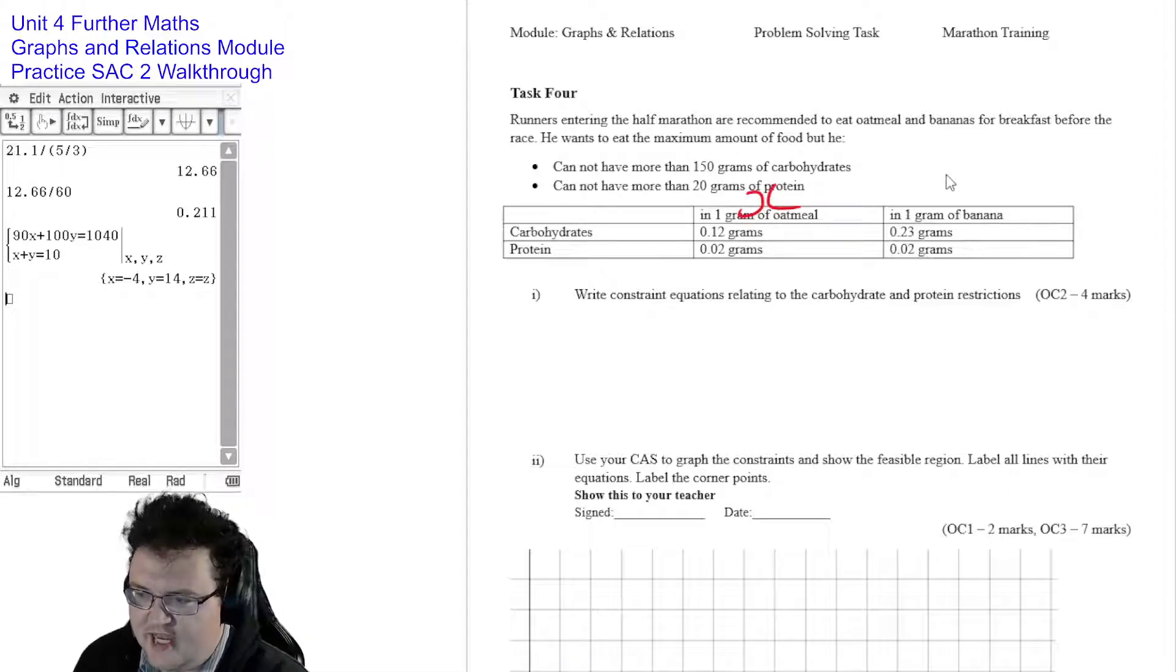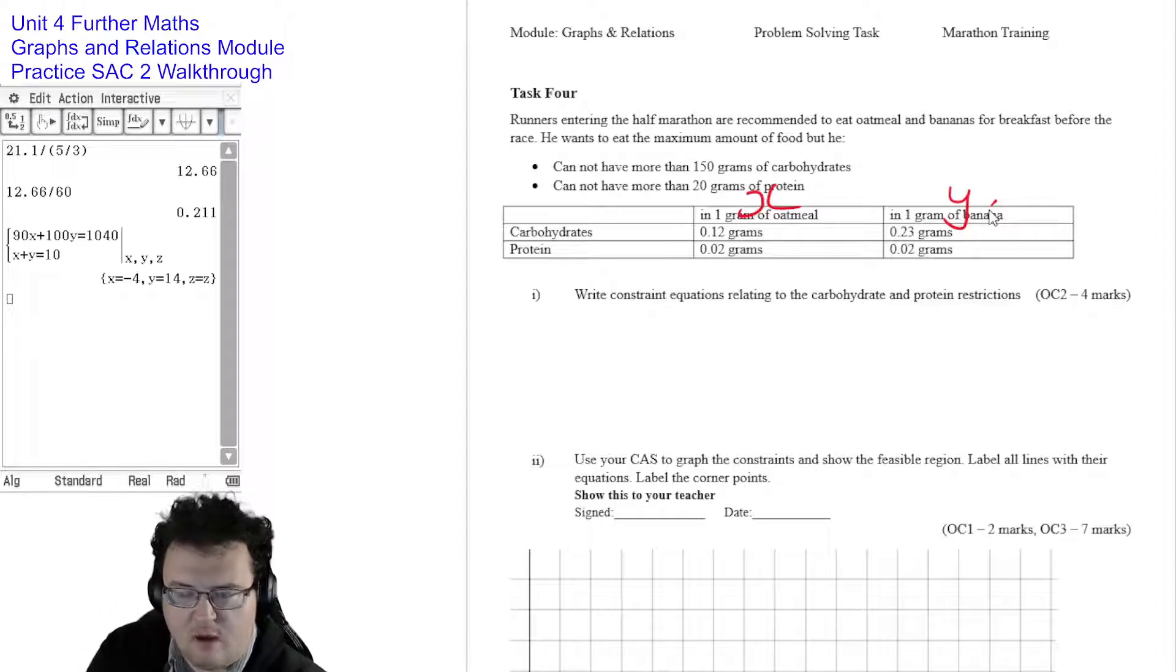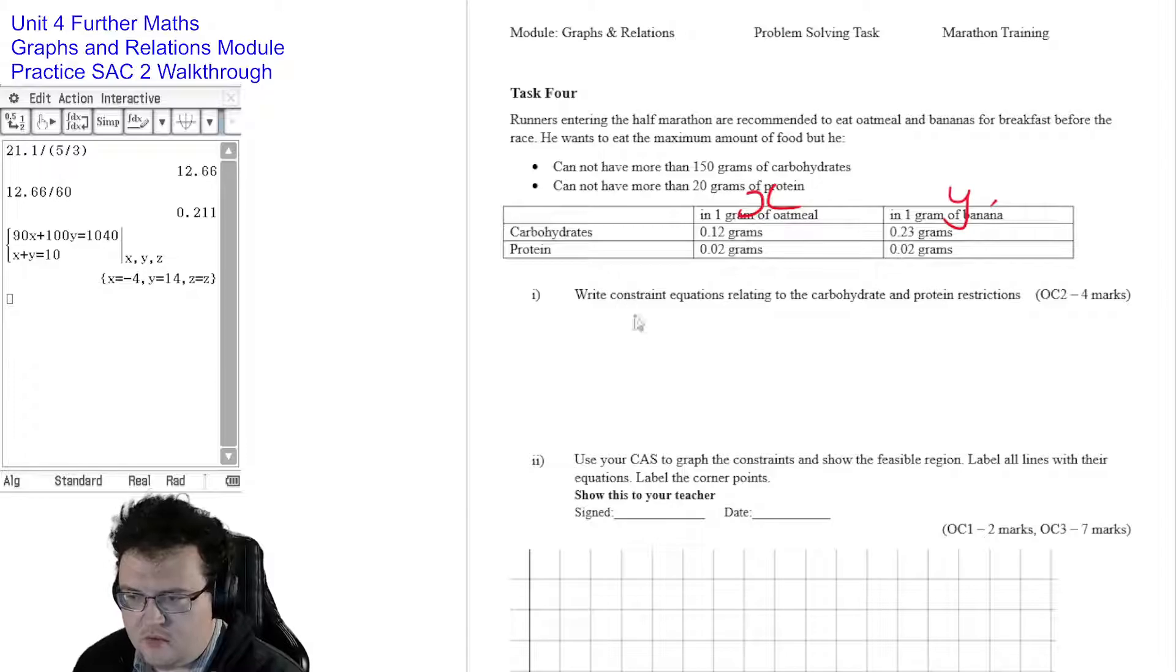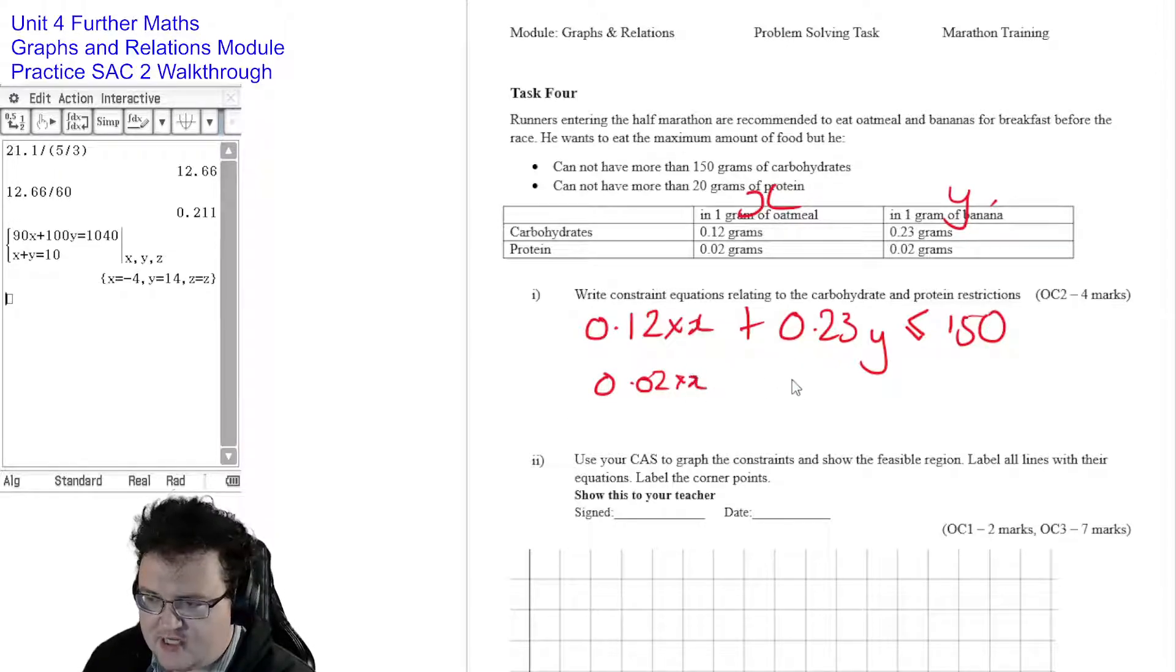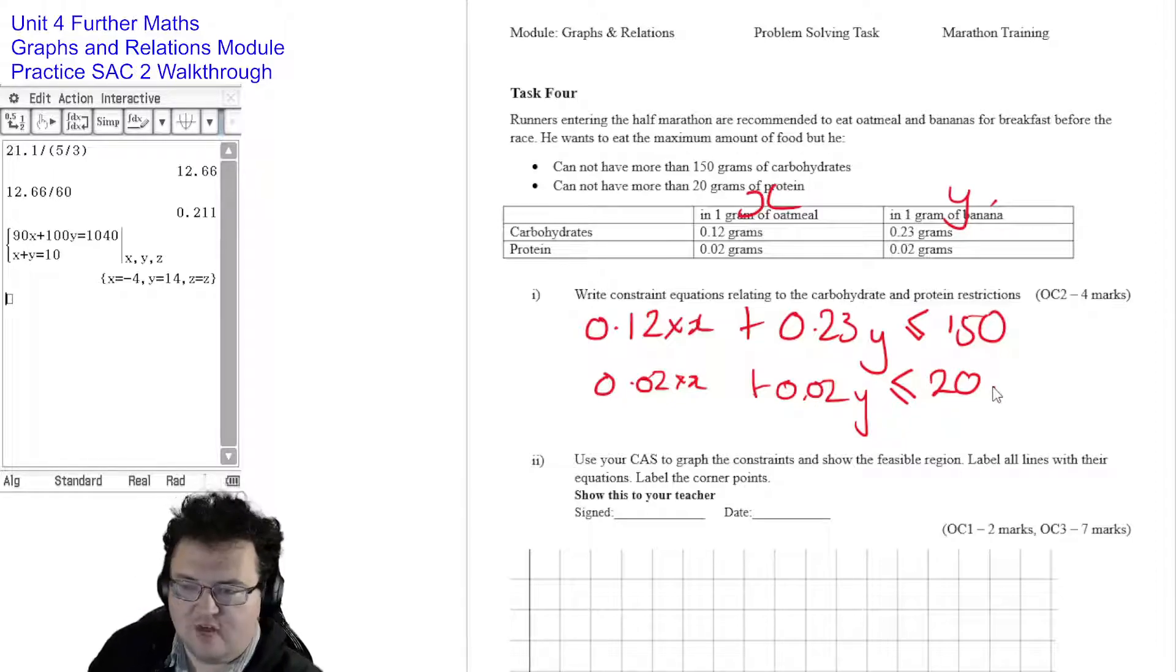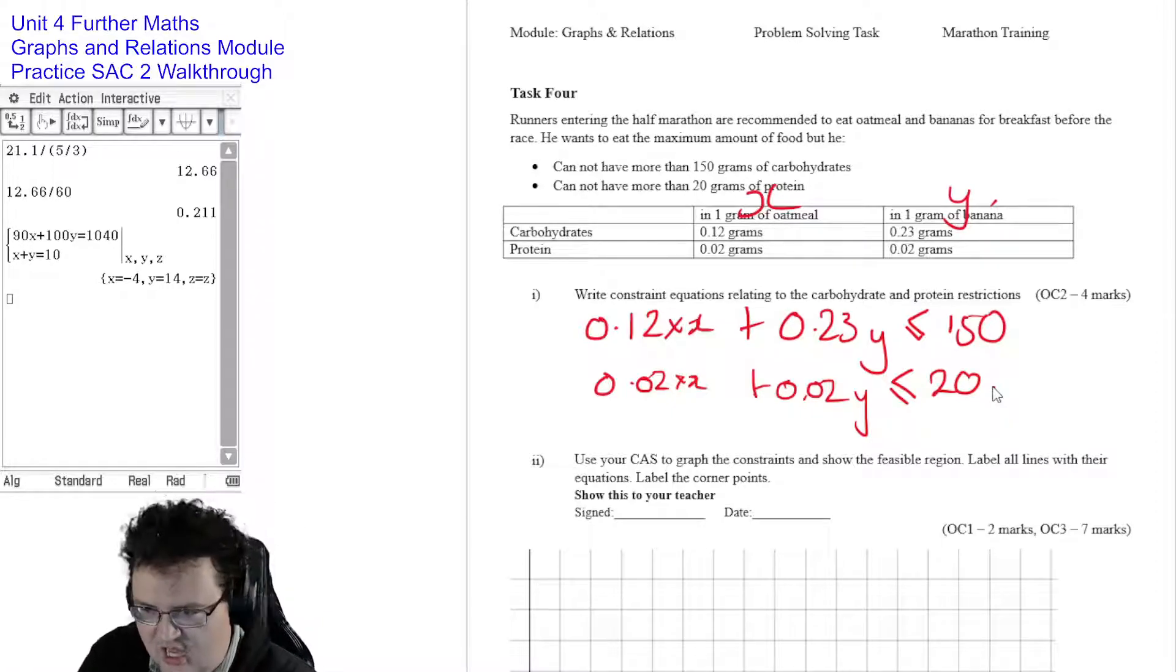So what we're going to do is we're going to call this X and we're going to call this Y. So 1 gram of oatmeal, so it's X grams of oatmeal, Y grams of banana. Carbohydrates: 0.12 times X plus 0.23 Y cannot have more than 150. So we have a maximum here, 150 like that. Next one here, 0.02 times X plus 0.02 Y must be less than or equal to 20. So whatever amount of protein that he eats can't add up to more than 20.